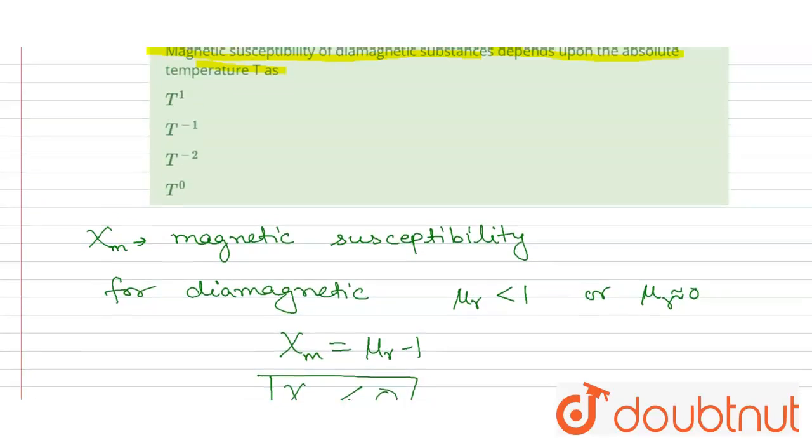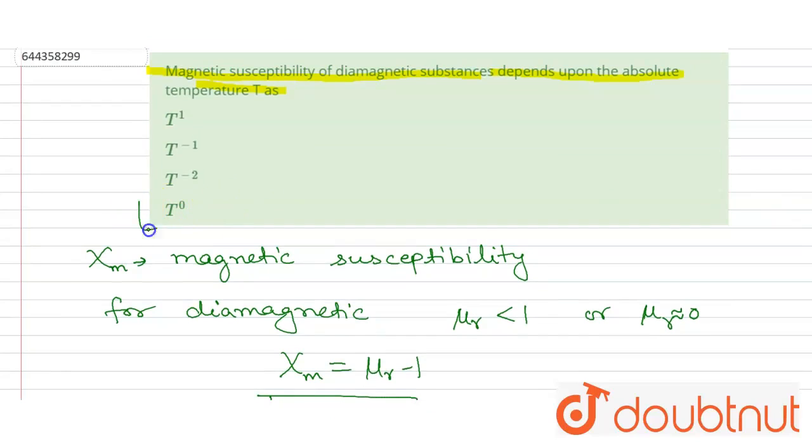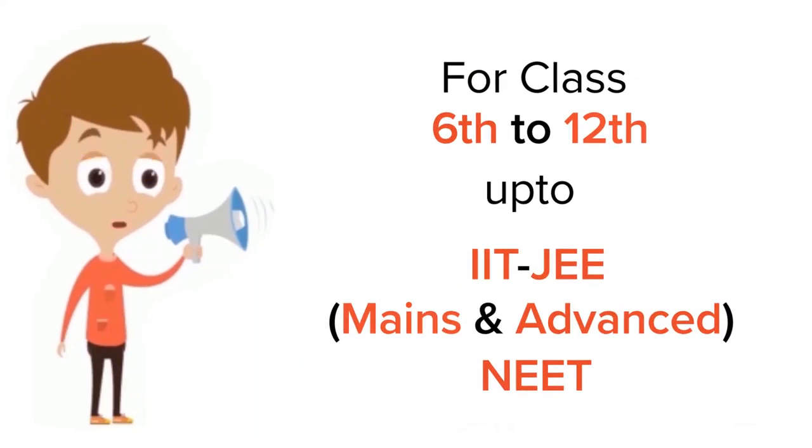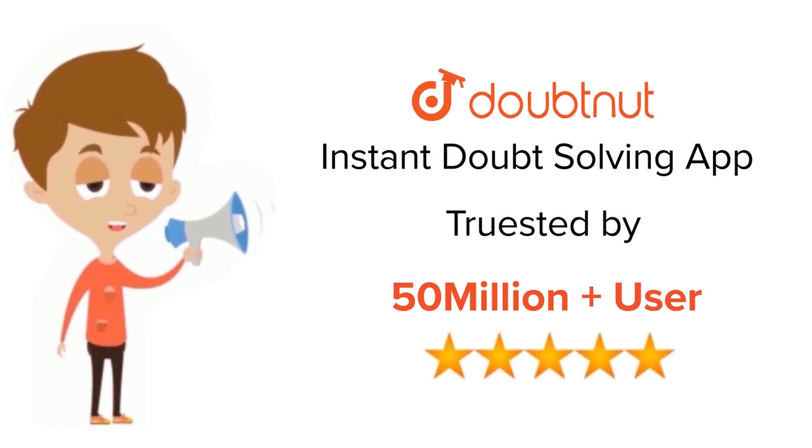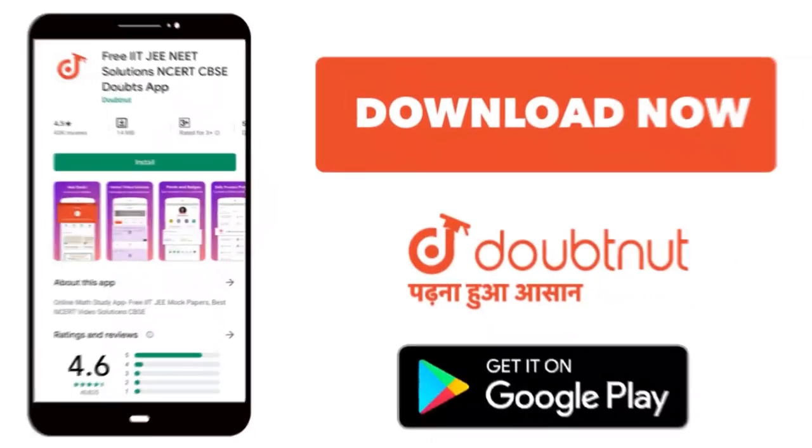So the correct option will be fourth one. Thank you. For class 6-12, IIT and NEET level, trusted by more than 5 crore students, download Doubtnut app today.